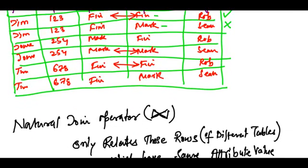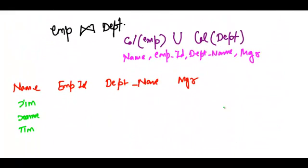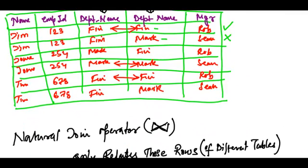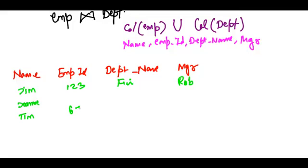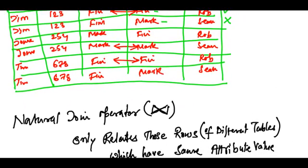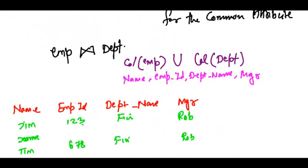Employee ID of Jim is 123, finance, manager is Rob. What about 678? Finance, manager is Rob. And what about Joanne? 254, manager is Sean. Department is marketing and manager is Sean.